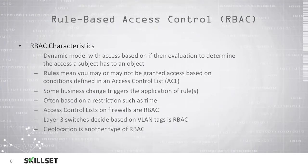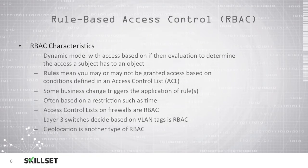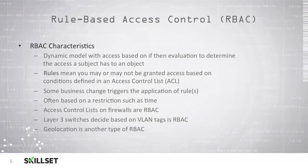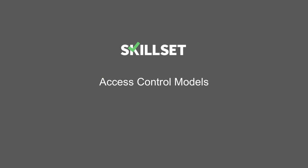Most firewalls use access control lists and are considered rule-based. Layer 3 switches can also determine which VLAN or Virtual Local Area Network traffic is supposed to be on based on tags, which is another example of a rule-based control. Another example is geolocation, where you can permit users to log into a system depending on where they are geographically located, or block them if they are not in the correct geographical area.